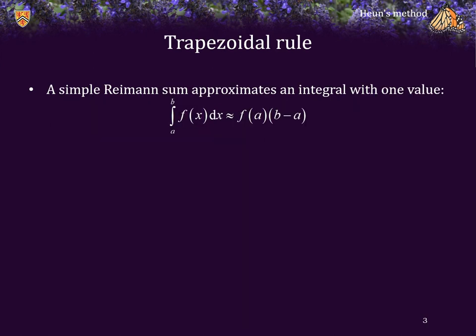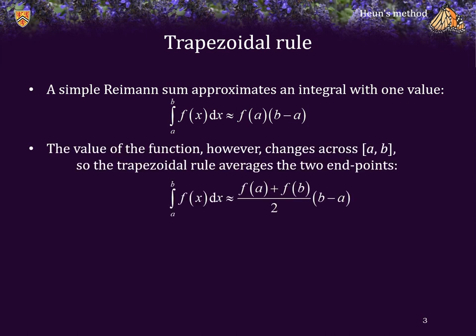Evaluating the function at the left-hand endpoint to approximate the integral is one way of calculating a Riemann sum. However, this only uses one value of the function, and the value of the function is going to change between the two endpoints, so picking just one is sometimes suboptimal. The trapezoidal rule assumes that the function is approximately linear on the interval from A to B, in which case the average of the two endpoints is actually a better approximation — especially if the second derivative is not very large.